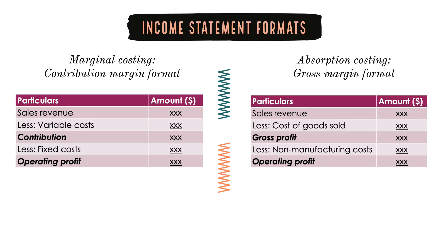Now, there is another important difference between the two methods. The format of preparing the marginal costing income statement is different from the format of preparing the absorption costing income statement. Here on the left hand side, we have the format of the marginal costing income statement, also known as the contribution margin format. And on the right hand side, we have the format of the absorption costing income statement, which is also known as the gross margin format.